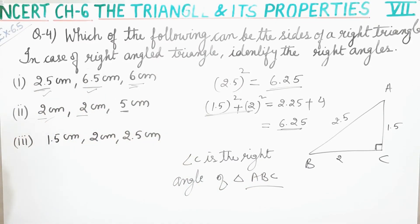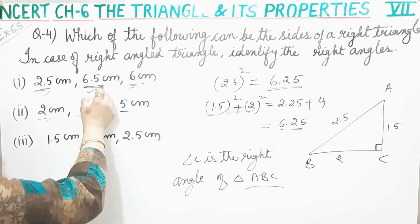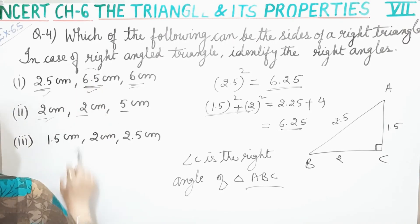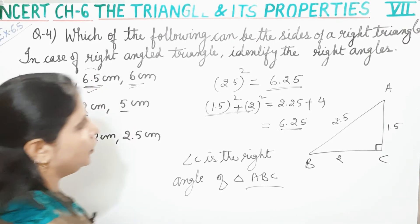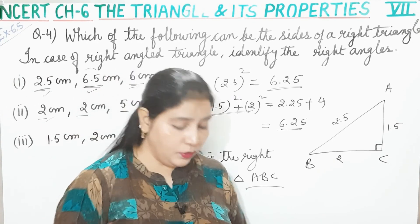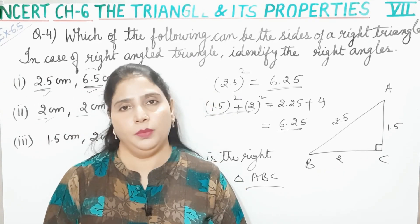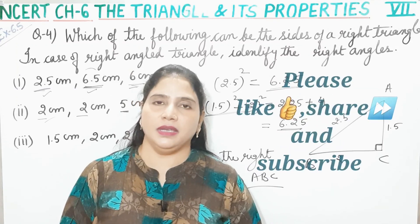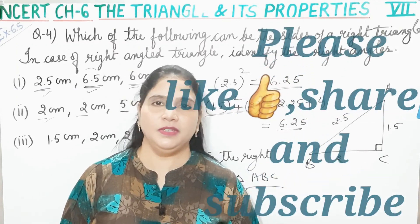Bahot easy hai. Jo longest side hoti hai, uska jo square hoga woh barabar hoga jo other two sides hain unke square ke sum ke barabar — aur yahi hamaari Pythagoras theorem hoti hai. I hope aap kuch samajh aa gaya hoga. Thank you for watching the video.